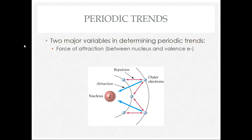The first variable is the force of attraction — the attraction between the nucleus and the valence electrons. The nucleus is positively charged, while the valence electrons are negatively charged. We're focusing on the valence electrons because those are the electrons involved with bonding and reactions.